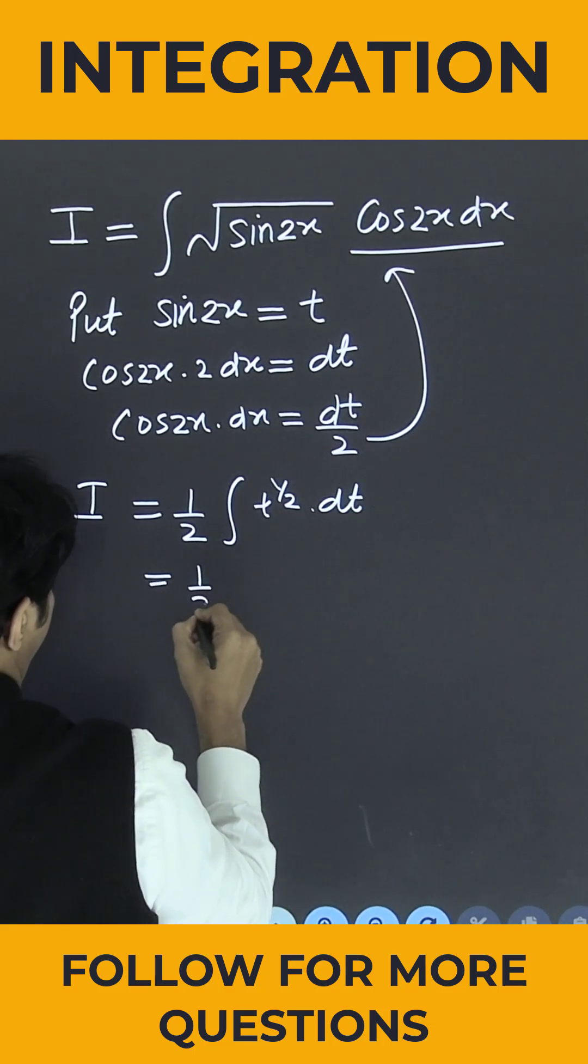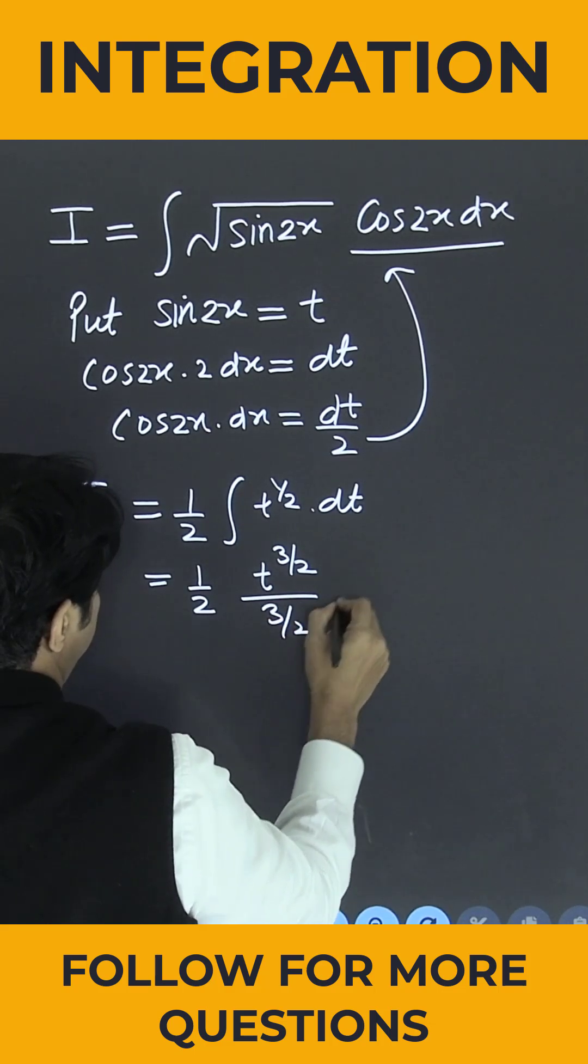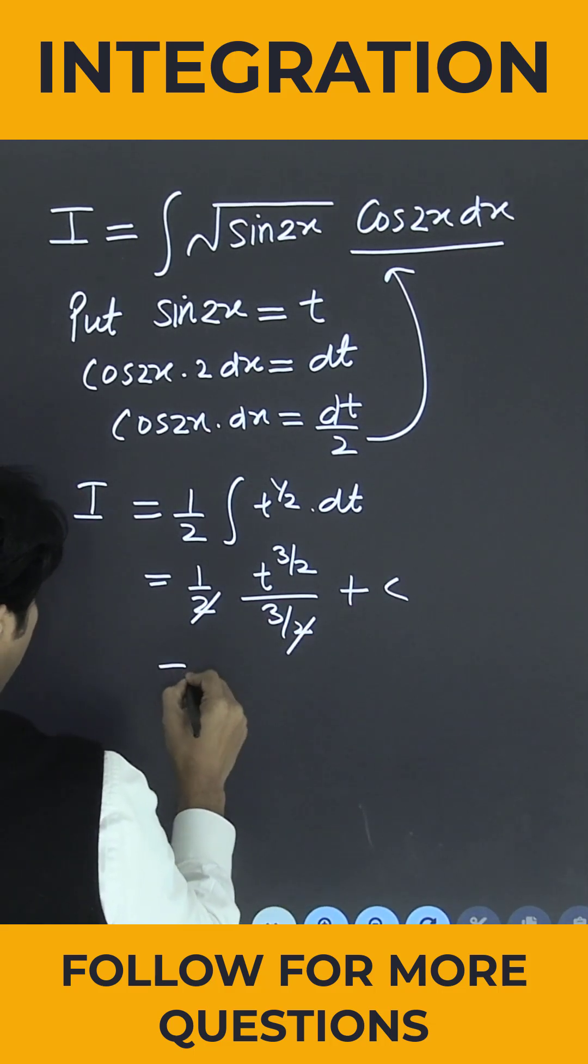So this is equal to 1 by 2 t to the power 3 by 2 divided by 3 by 2 plus c. This 2 and this 2 is cancelled out.